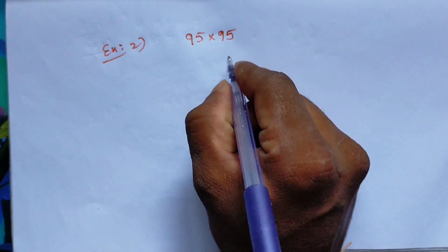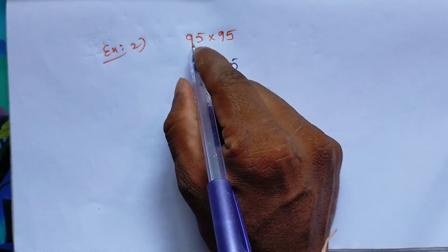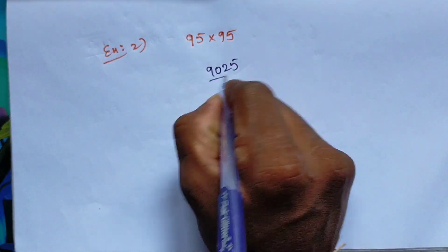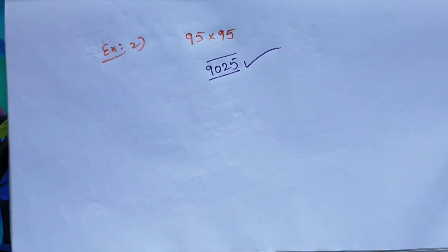So 5 times 5 is 25. Next, 9 times the next number 10 is 90. So the answer is 9025.